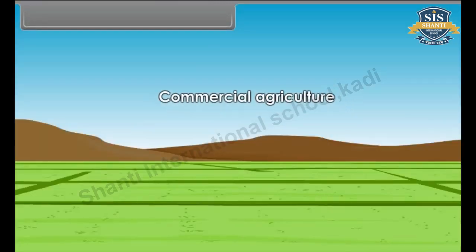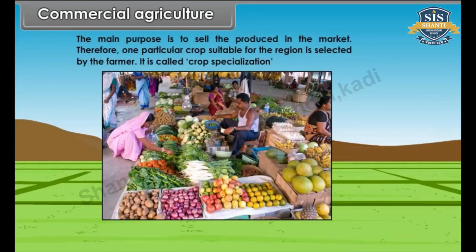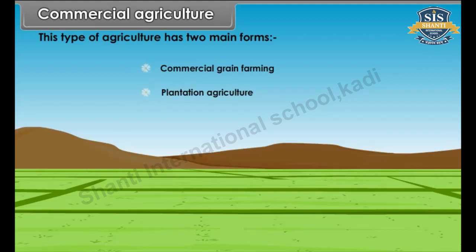Commercial agriculture: the main purpose is to sell the produce in the market. Therefore, one particular crop suitable for the region is selected by the farmer. It is called crop specialization. This type of agriculture has two main forms: commercial grain farming and plantation agriculture.